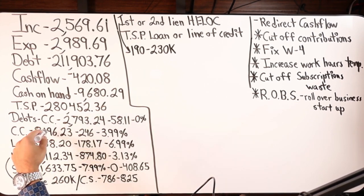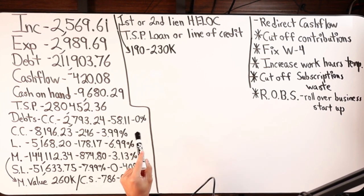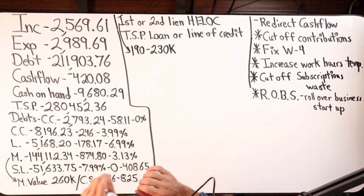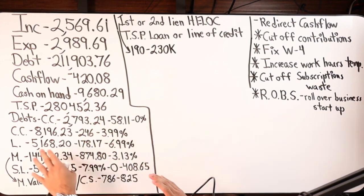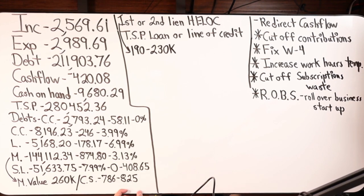Going over the debts: they've got two credit cards — one at twenty seven hundred ninety three dollars at zero percent until next year, paying fifty eight dollars a month. Since it's zero percent I'll pay the minimum and ignore it. The next credit card is eight thousand two hundred forty six at three point nine nine percent. Then there's a mortgage at one hundred forty four thousand at three point one three percent amortized, and a student loan currently with no payments but kicking back in later this year at four hundred eight dollars and sixty five cents. Mortgage value is two hundred sixty thousand. Credit score ranges from seven eighty six to eight twenty five across the three bureaus.